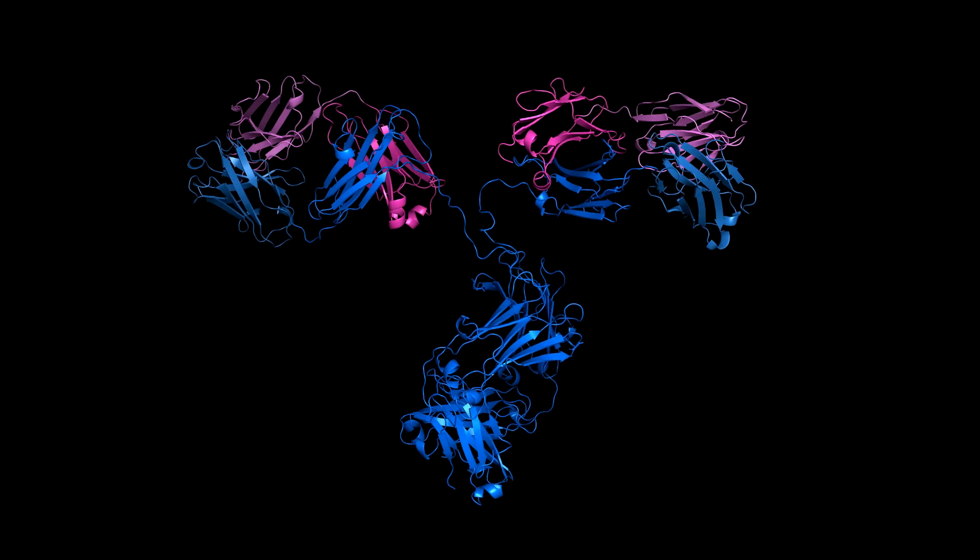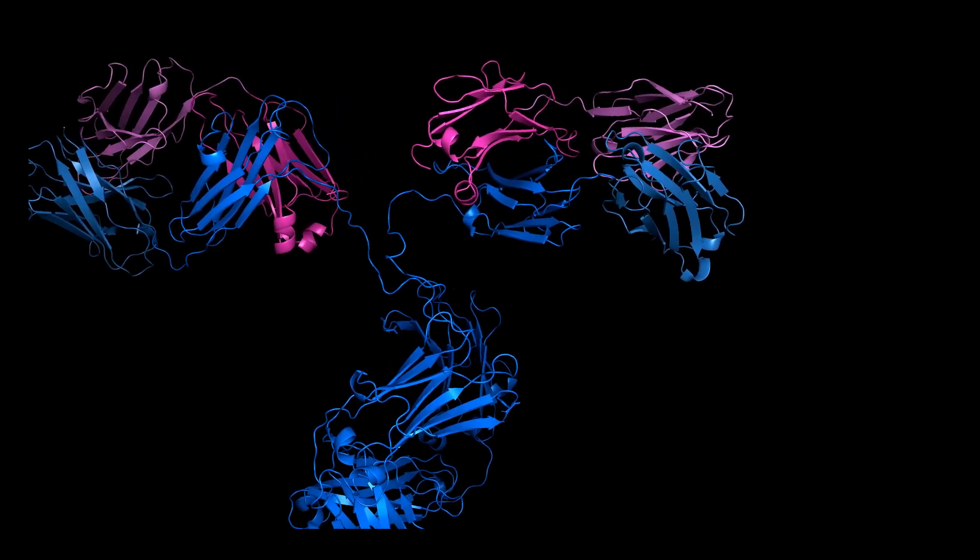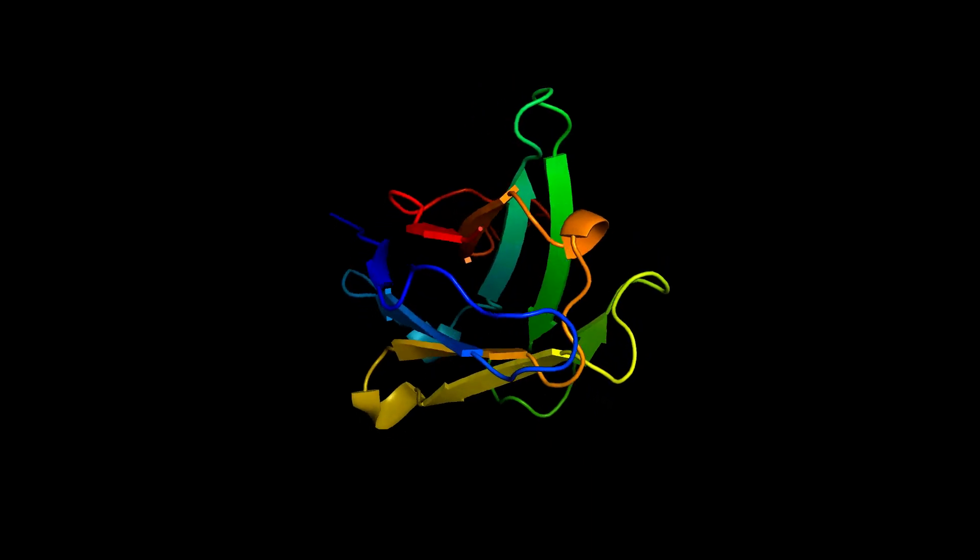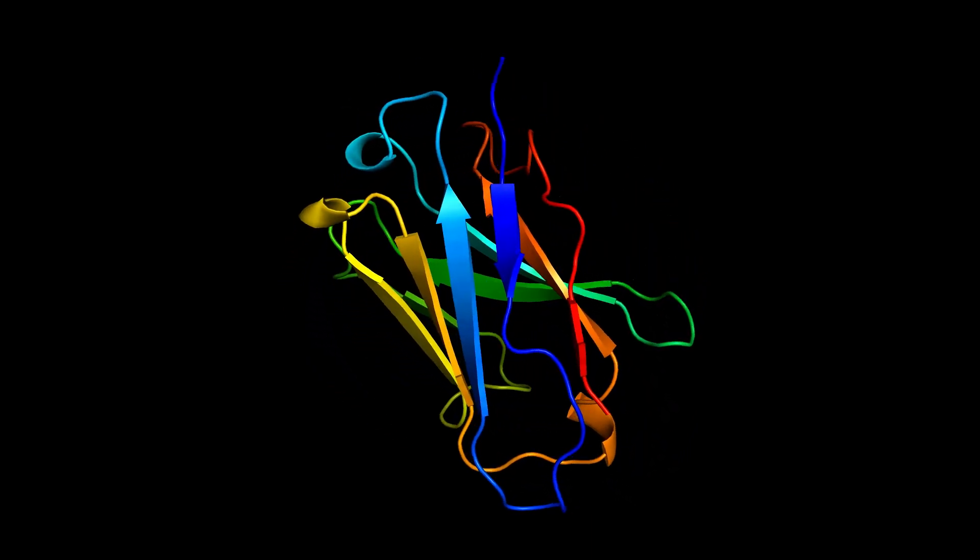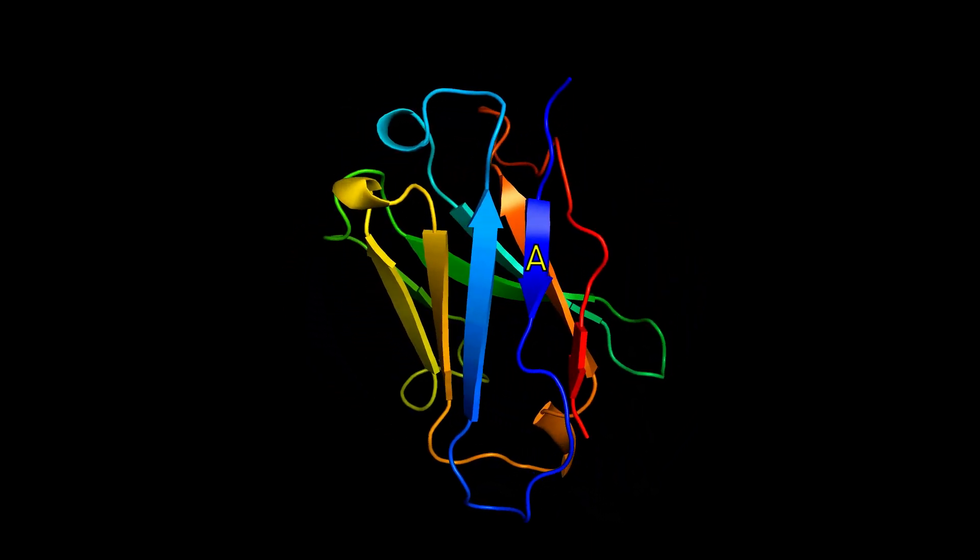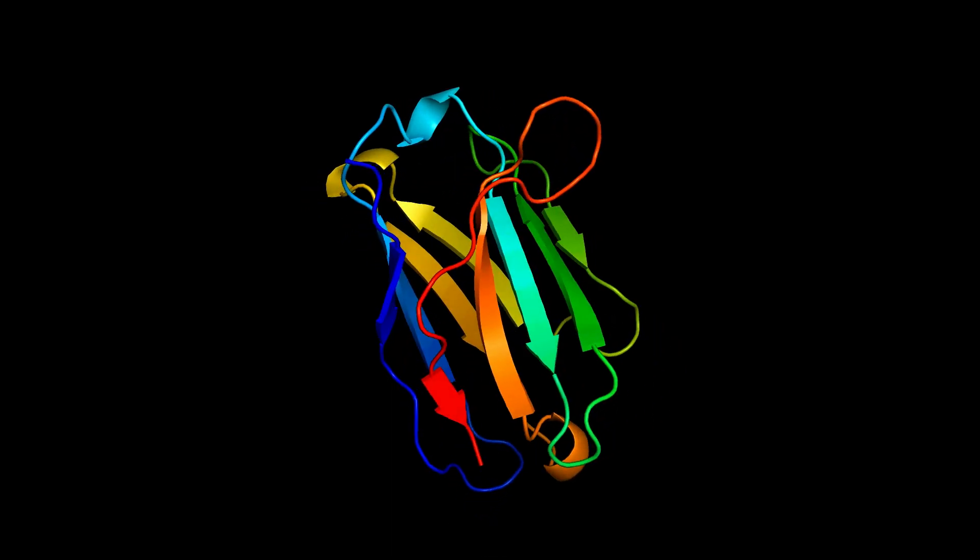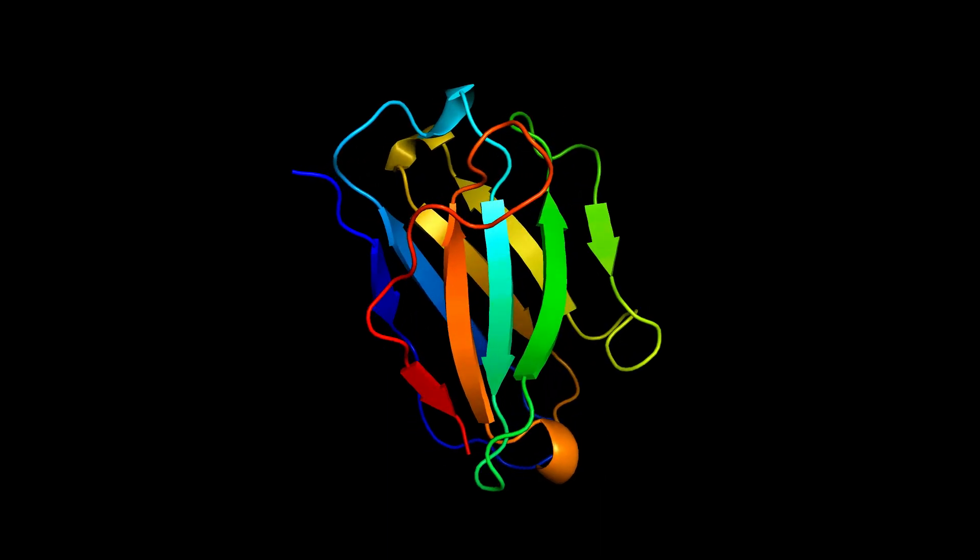The immunoglobulin fold is slightly different in the variable domains. Let's check out one of those. Applying the rainbow color scheme once again, and focusing on the N-terminal beta strand, here's strand A. A flexible loop connects this to strand B, and again, we'll need to rotate our structure to see the connection to strand C, shown in blue-green.